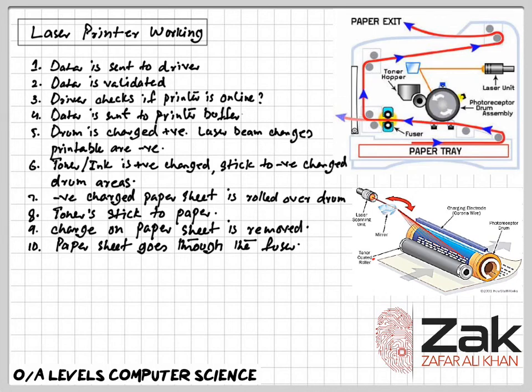The paper goes through a fuser, a set of heated rollers where the heat melts the ink so that it fixes permanently to the paper.